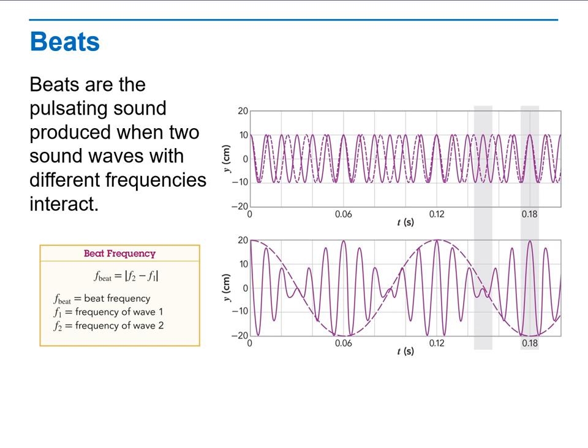We will predict the effect of alternating constructive and destructive interference on sound. It produces a sound that alternates between soft and loud. Notice that beat frequency is always positive, and therefore, it is the absolute value of the difference in frequency.